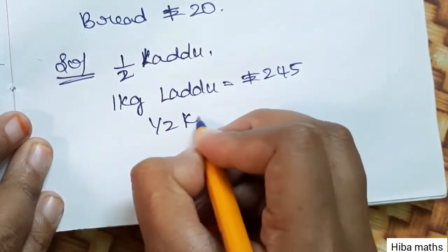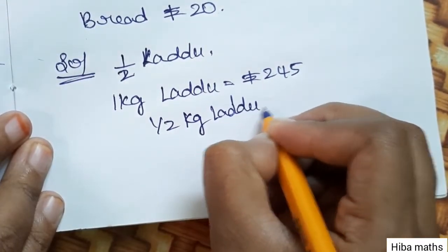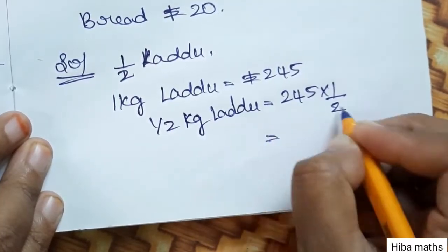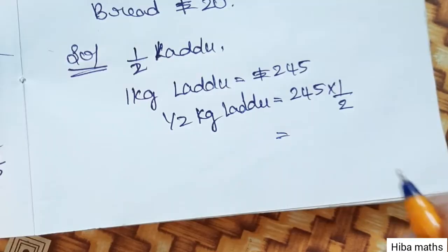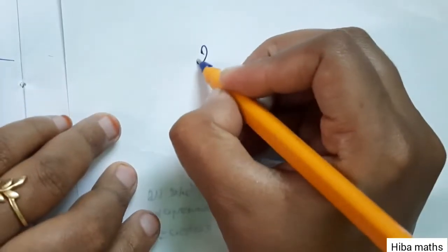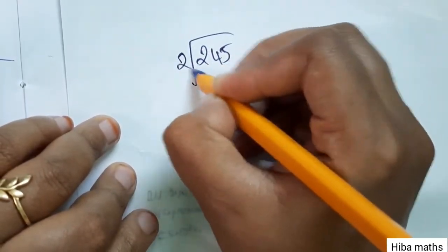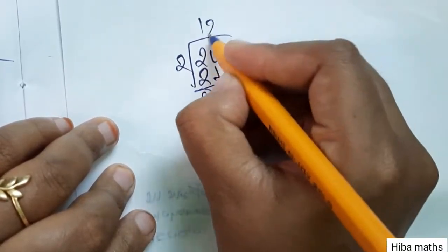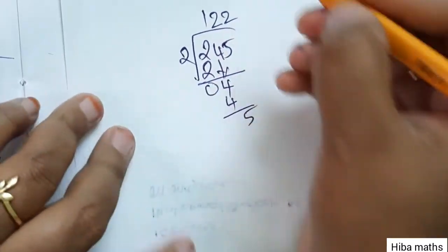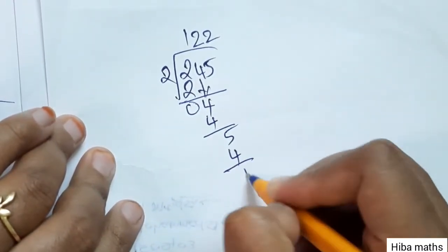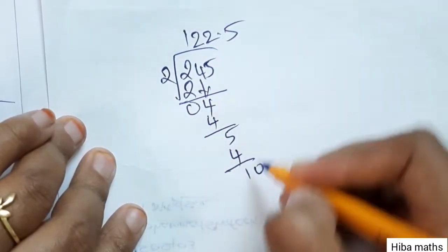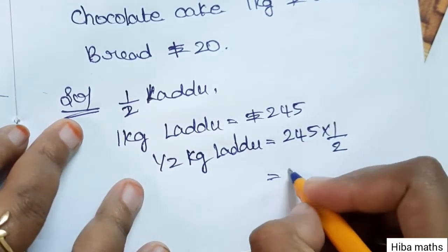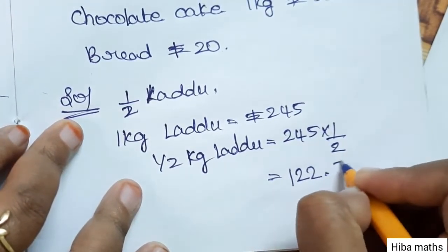Half kg laddu is Rs.245 divided by 2. Doing the division: 245 ÷ 2 — 2 into 2 is 1, remainder 0; bring down 4, 2 into 4 is 2, remainder 0; bring down 5, 2 into 5 is 2 remainder 1; so 10 ÷ 2 is 5. Therefore half kg laddu is Rs.122.50.